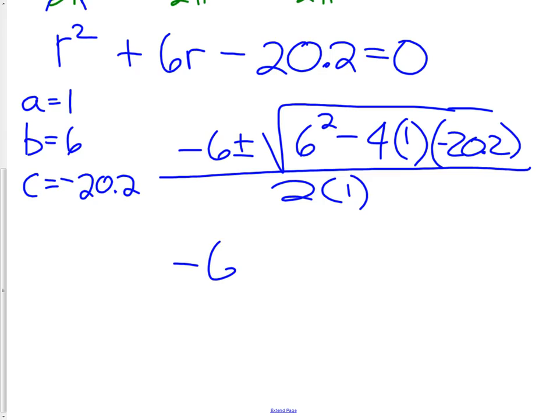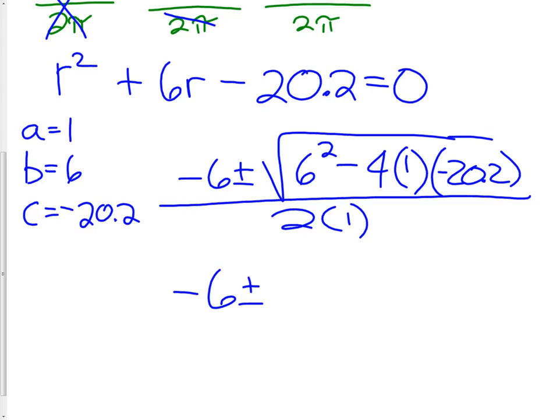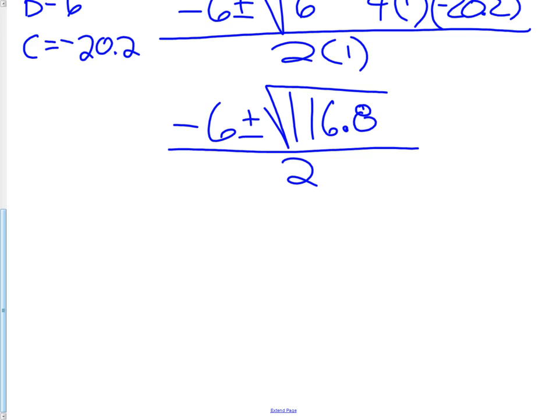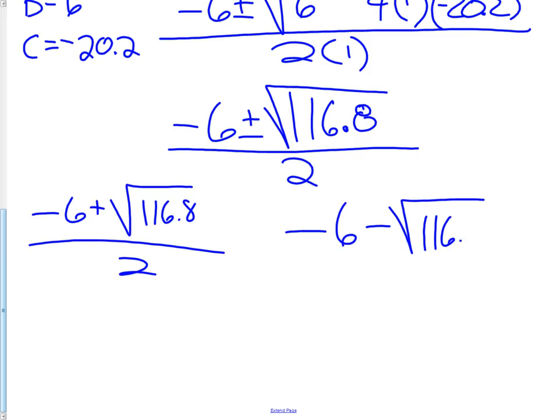Simplifying this, we have -6 ± √(6² is 36). 36 plus the other part of that expression there. We have 6² - 4 times 1 times -20.2. It's going to give us the square root of 116.8 all over 2. It's going to take a little bit of work with our calculator to figure this out, but we're going to solve this twice now. Once for the positive, √116.8 over 2, and once for the minus, √116.8 over 2.